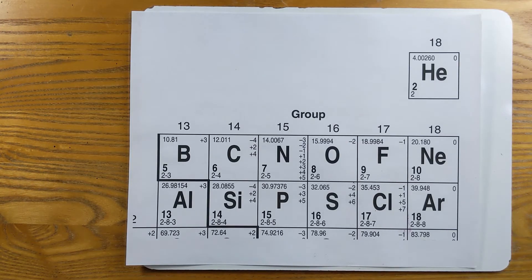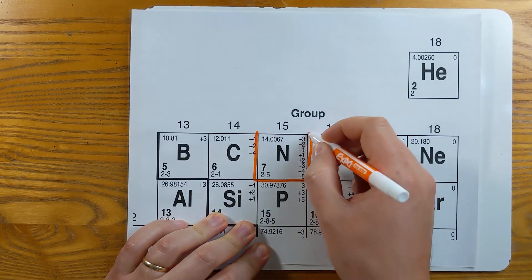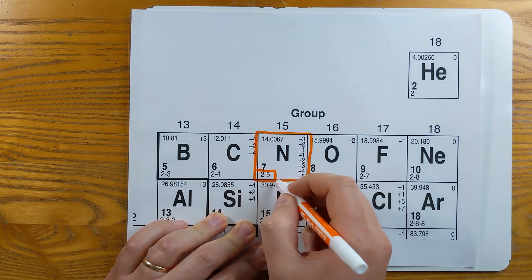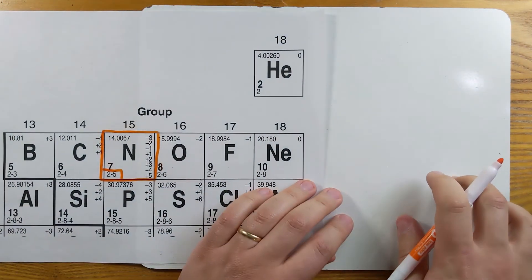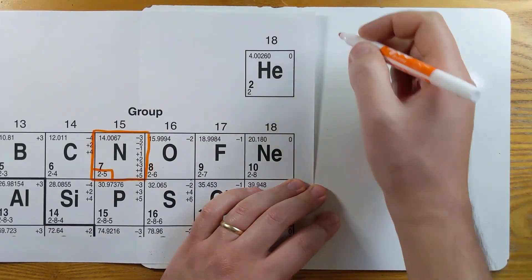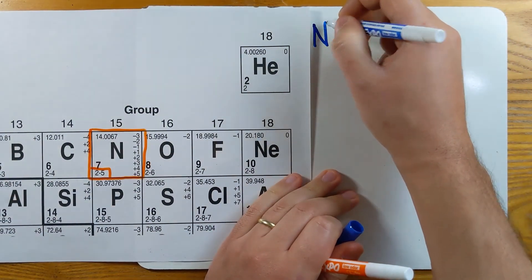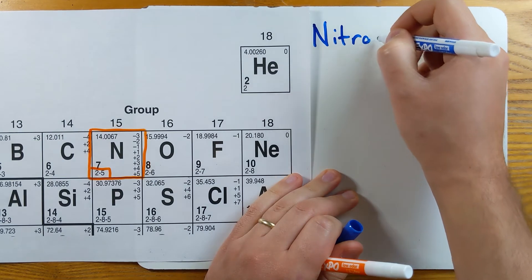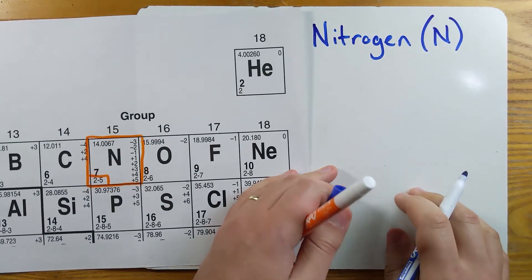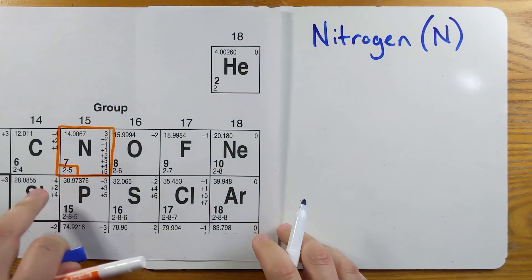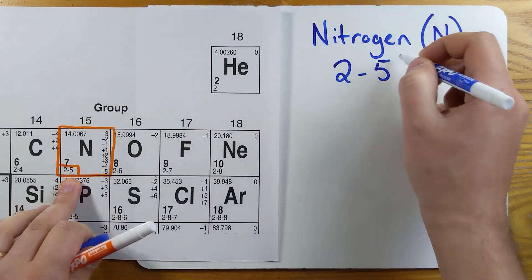Let's do one more example with the element nitrogen, N, and the electron configuration. Element name: nitrogen, element symbol N, and the electron configuration is 2-5. That's all I need the periodic table for.